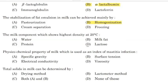The milk component which shows highest density at 20 degrees Celsius — Correct answer: Option D — Lactose. Physicochemical property of milk which is used as an index of mastitis infection —